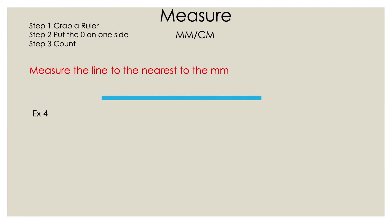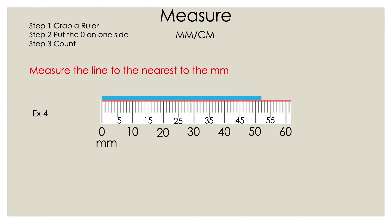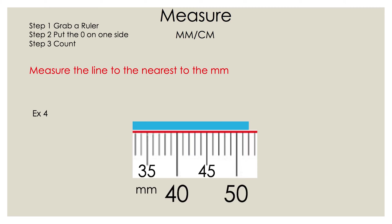Now let's take a look at the last example, measure the line to the nearest millimeter. And then you grab the ruler, you put the zero next to the end of the line. And now we're going to blow it up so you can see it easier.